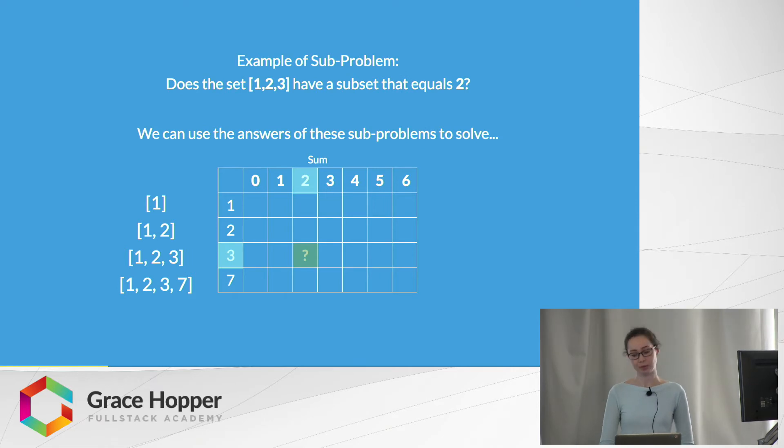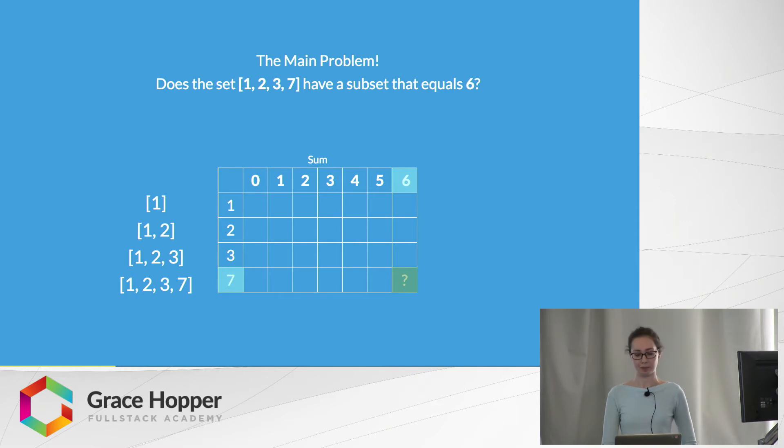An example of a subproblem we might solve, based on our table, is: does the set {1, 2, 3} have a subset that equals 2? Our set is at left, I've highlighted it, and the sum that we want for the subproblem is also highlighted. We can use these subproblems to solve our main problem, which in this case is: does the set {1, 2, 3, 7} have a subset that equals 6? Again, the full set is at left, highlighted, and the sum is at the top.